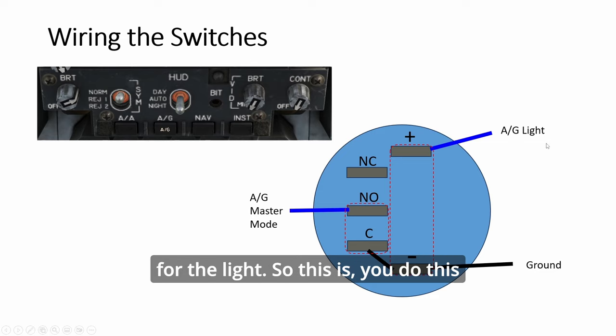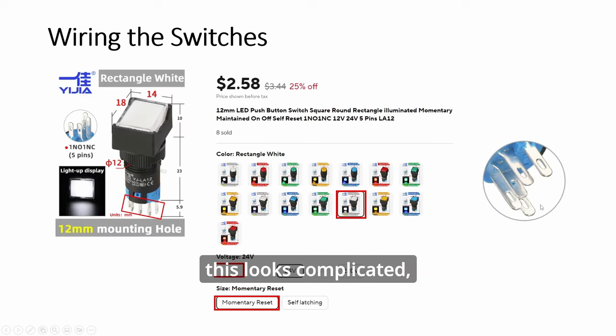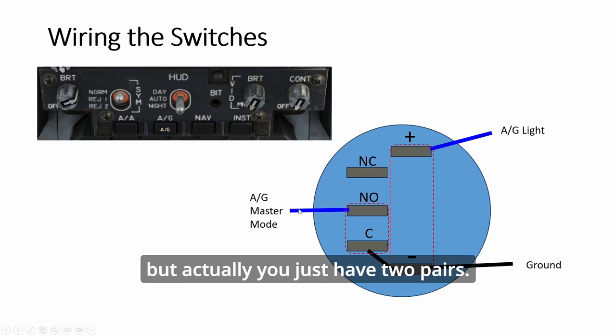So you do this four times. Right? Each one of the switch at the bottom. The plus goes to the light for the respective mode and then the ground. So you can daisy chain the ground. So you don't have two ground wires, just one ground wire. Okay? One master mode for each of the four and then one light for each of the four. So this looks complicated, but actually you just have two pairs. Okay? So wiring is quite simple.